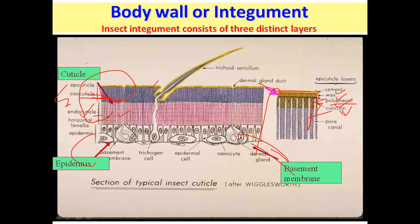The epidermal layer is a unicellular layer of the insect body wall, formed by various polygonal cells. The cells become columnar during the process of molting. Each cell consists of a well-developed nucleus and cytoplasmic content. The epidermal layer is important because it contains glandular cells that secrete the cuticle.